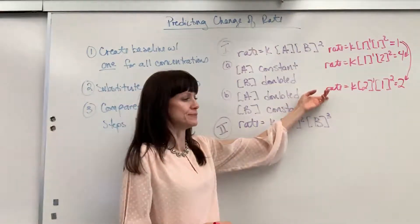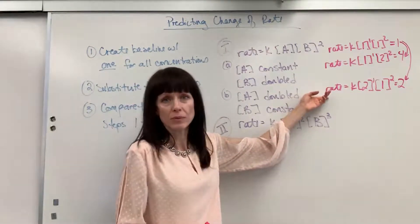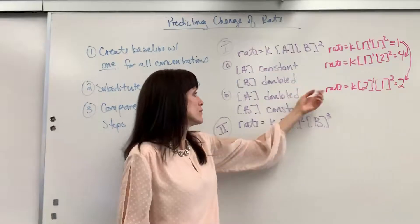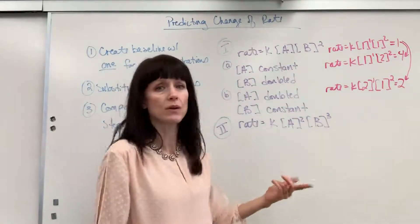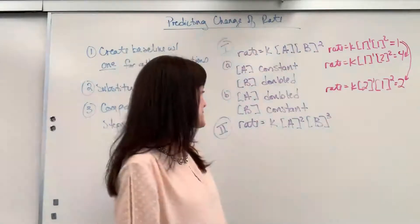Again, if you're given the rate, maybe it's 0.5 molar per second, if you double A, it's going to go twice as fast. So you just multiply that by 2. Instead of being 0.5 molar, it would be 1 molar per second.